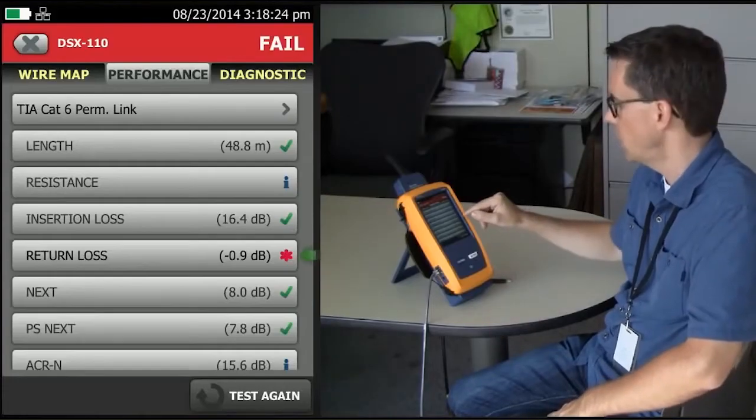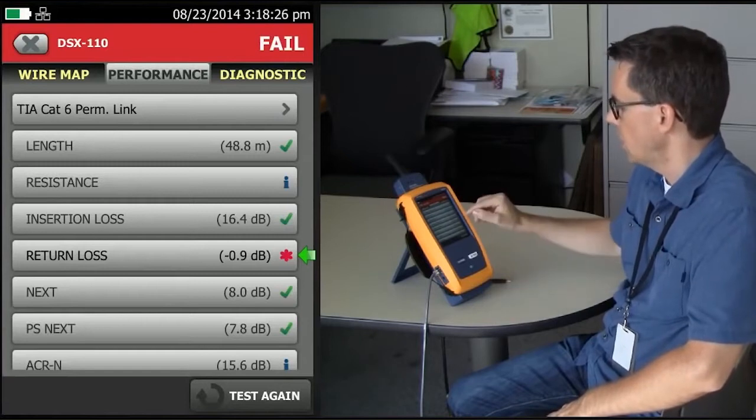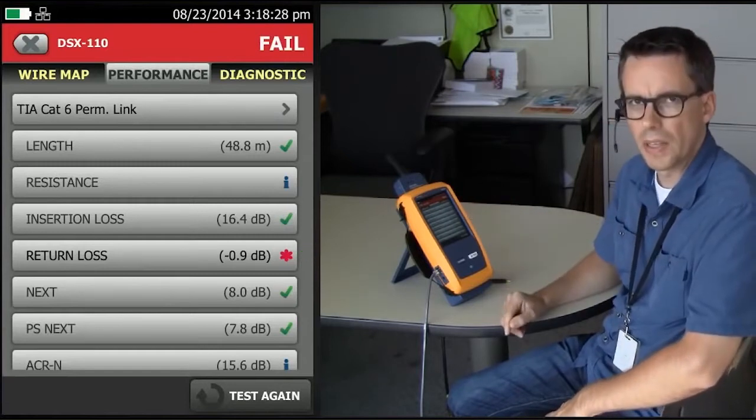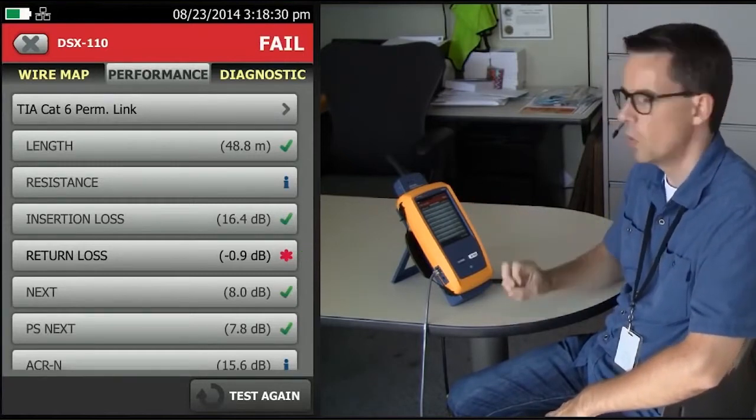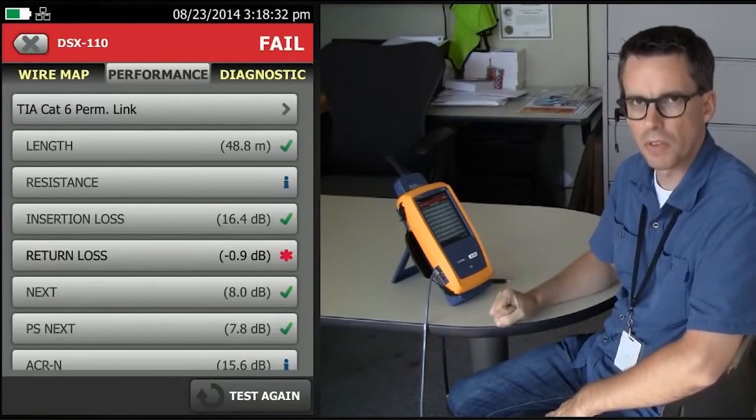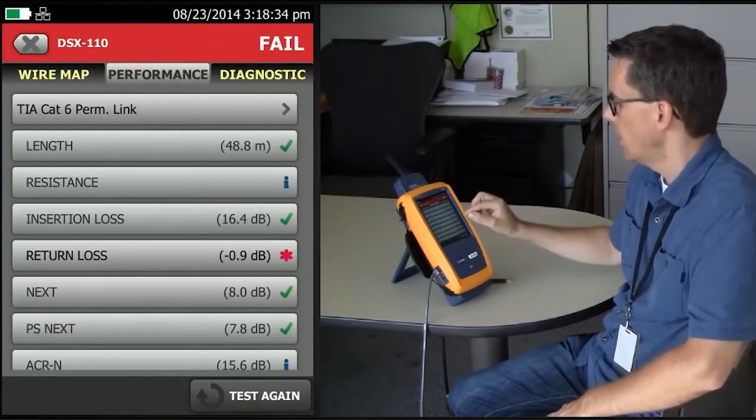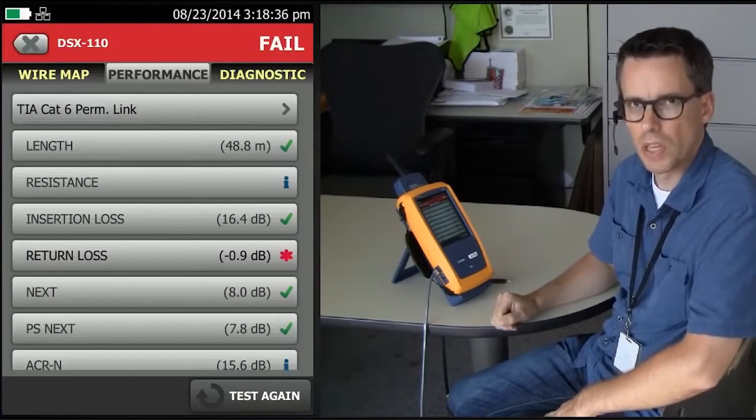In this example, we see return loss fail, and the red asterisk at the side here indicates that it's a very small fail, but within the accuracy of the instrument. However, a fail is a fail, so we need to diagnose it.